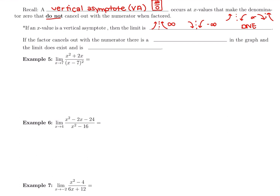If the factor cancels out with the numerator, then there is a hole in the graph. That happens when you plug in and get 0 over 0. So a number over 0 gives infinity, negative infinity, or DNE. A hole is the 0 over 0 case — you can factor and cancel these. The final answer is where the limit does exist and is finite — it's just a regular number.